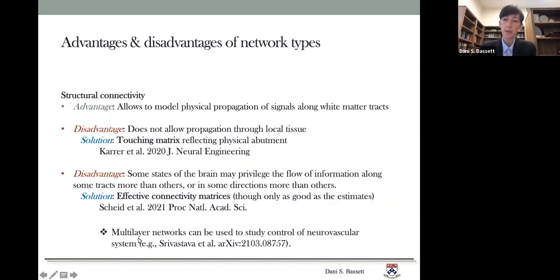What are some advantages and disadvantages of different network maps? Well, first, I said that the common one would be structural connectivity. That has the advantage of allowing to model physical propagation of signals along white matter tracks, but it also has two disadvantages. One disadvantage is that it does not allow for propagation through local tissue where a white matter track has not been defined.